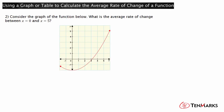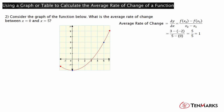Now, look at the second problem, which is a quadratic equation. Consider the graph of the function below. What is the average rate of change between x equals 0 and x equals 5? Here, the y value of x equals 0 is negative 2, and the y value of x equals 5 is 3. Using the formula you just learned, you can calculate the average rate of change. The average rate of change is 3 minus negative 2 divided by 5 minus 0. The result is 5 divided by 5, which is 1.